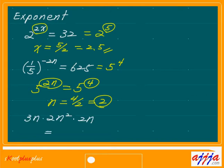Numbers first — numeric. 3 times 2 times 2, which is 12. Now for the variables: n to the first power, n to the second power, n to the first power again. All we have to do is add the exponents: 1 plus 2 plus 1, which is 4. So it's n to the 4th power.